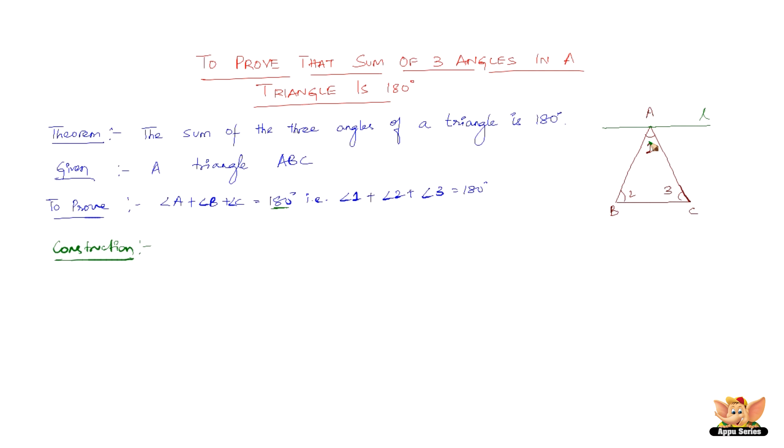This line is parallel to BC. As a result of drawing this line, we get a couple more angles here. Let us label them as angle 4 and angle 5.